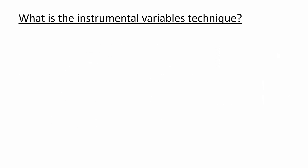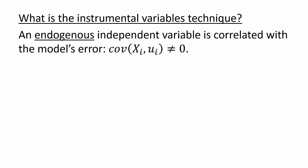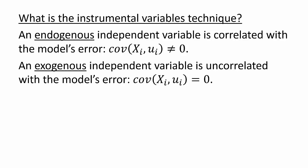Instrumental variables is a technique for estimating models with an endogenous independent variable. Recall that an endogenous variable is one that is correlated with the model's error term. By contrast, an exogenous variable is an independent variable that is uncorrelated with the model's error term.